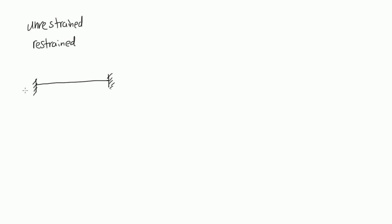The first thing we need to know is the difference between unrestrained and restrained. Let's say we had a beam and both ends were fixed. This beam has 6 degrees of freedom: this rotational one here, this rotational one, this vertical one, this vertical one, this horizontal one, and this horizontal one. So 1, 2, 3, 4, 5, 6.